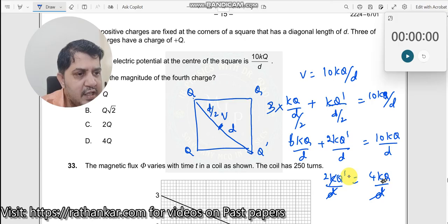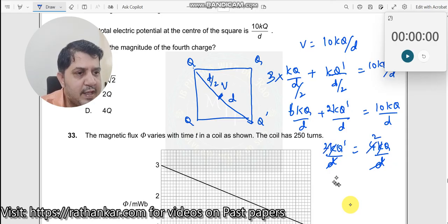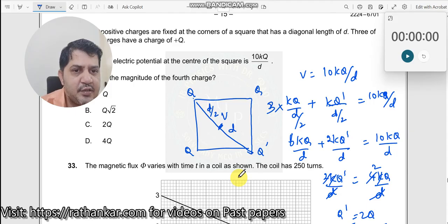d goes away, k goes away. What do I have here? q dash. So 2 into 2, q dash will now become 2 times q. So the answer is 2 times q.